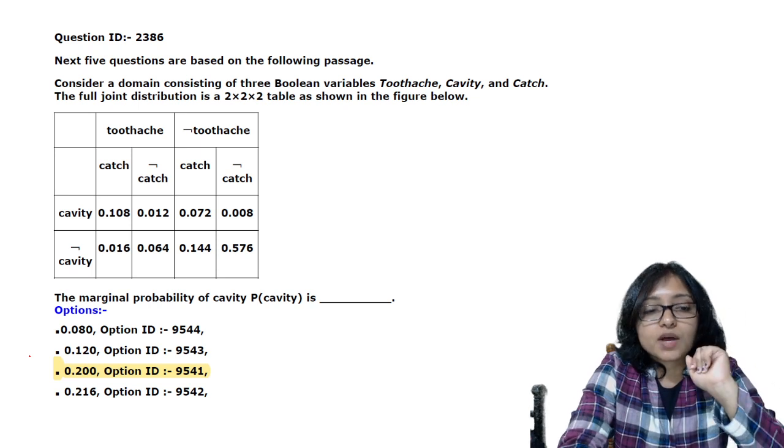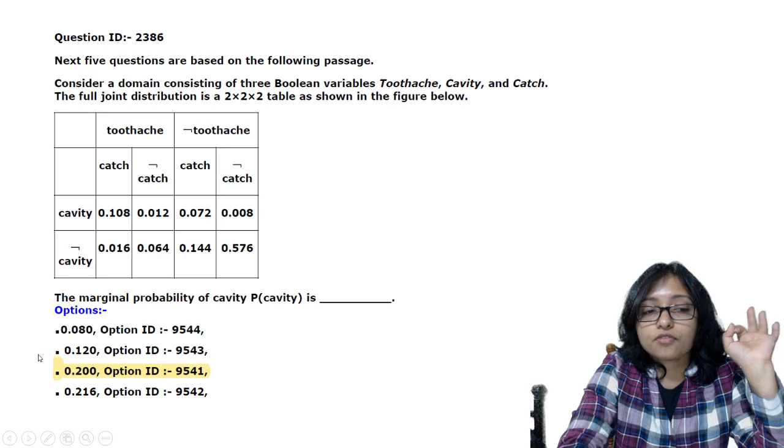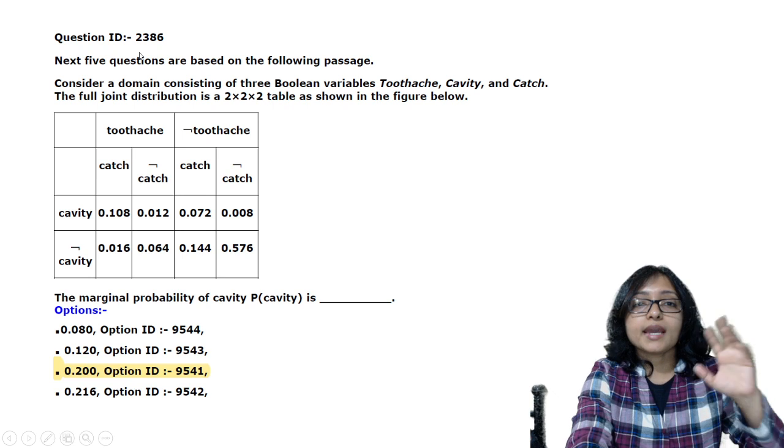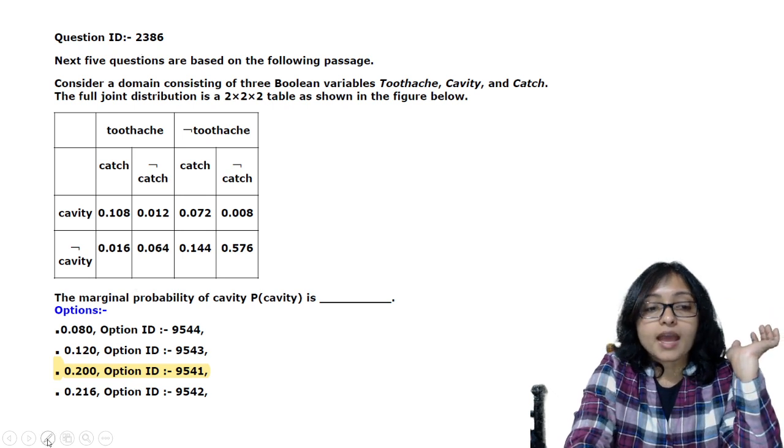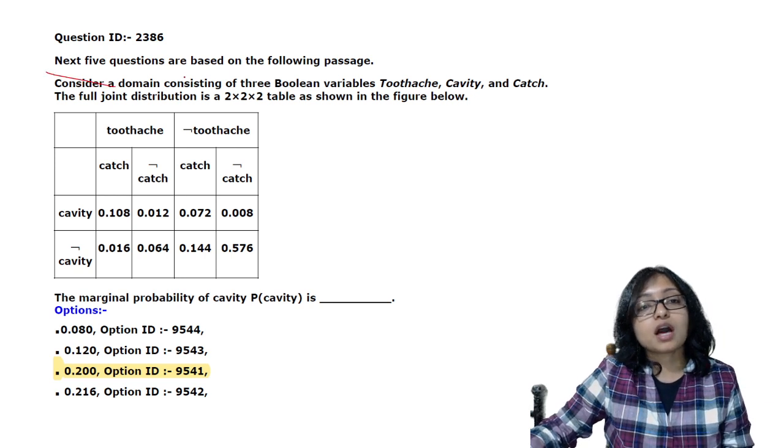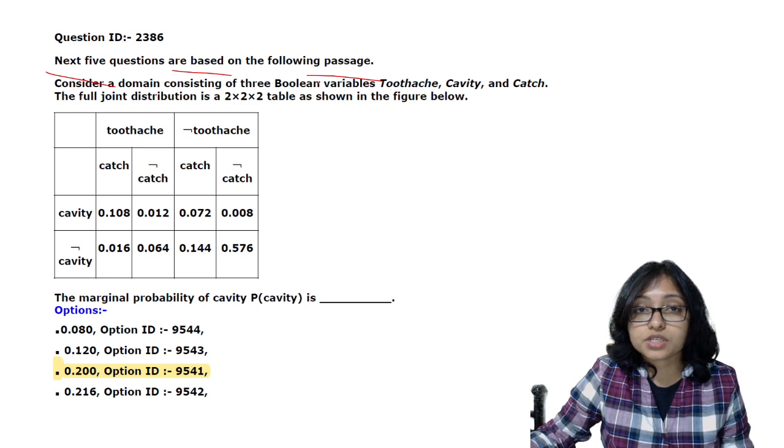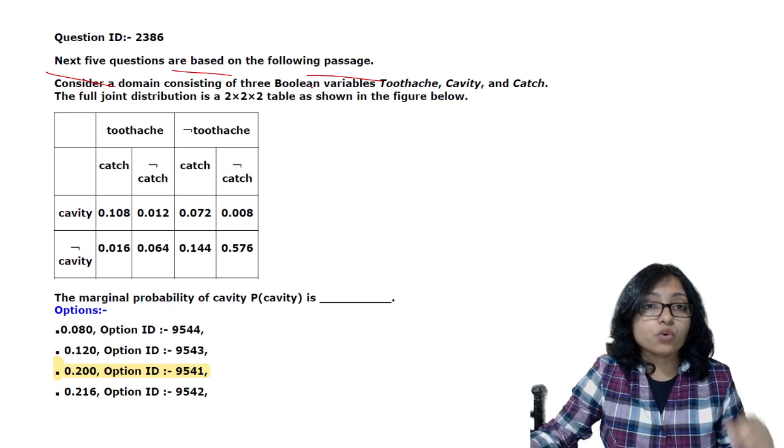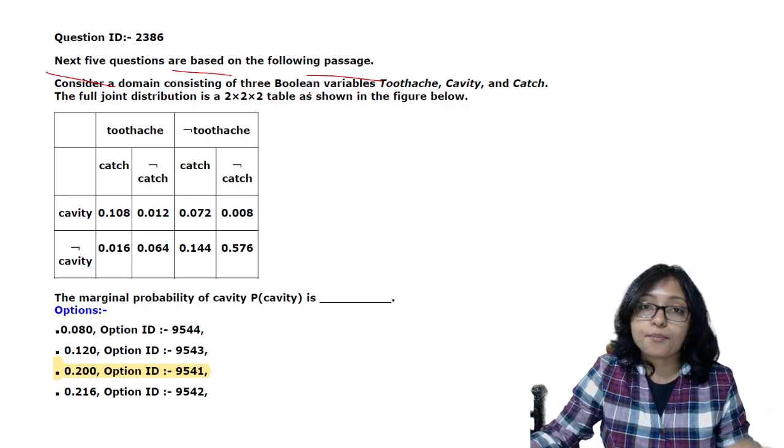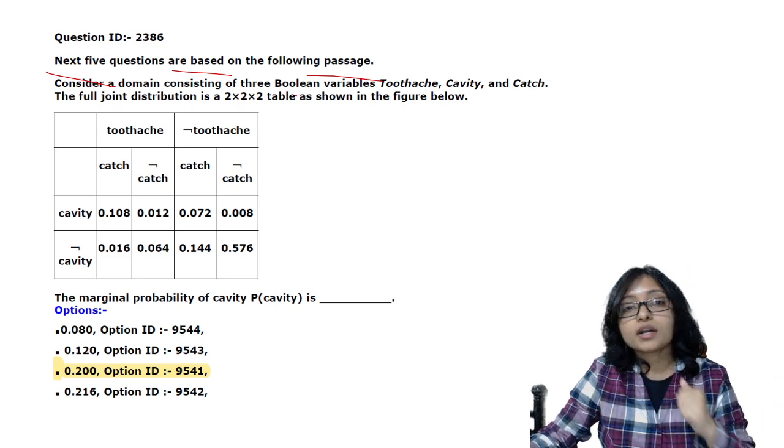See here, this was the toothache-cavity question. This is the most problematic question of this time. In this toothache-cavity question, it was 2386 number question and as per this question they have written that next 5 questions are based on this passage. But what you can see in your PDF, in your response sheet and that happened in our exam hall actually, we did not get the question, it was not in sequence.